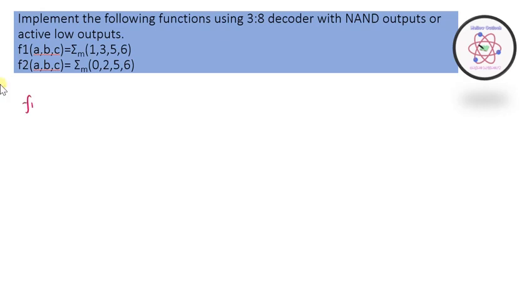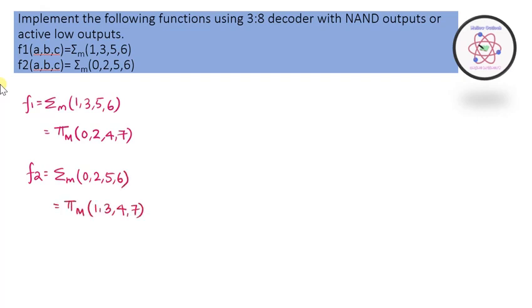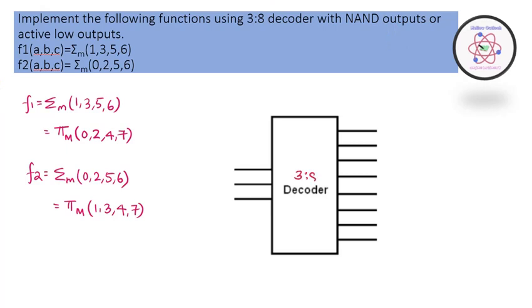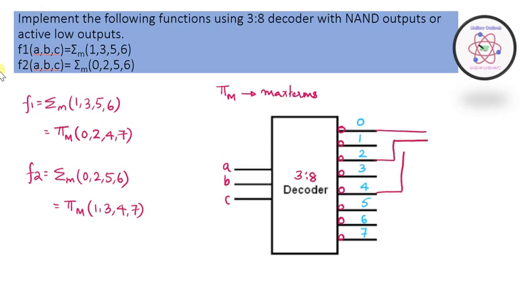The next question asks us to implement a function using a 3-to-8 decoder with NAND outputs or active low outputs, where the functions are given in terms of min terms. For NAND output implementation, we must first represent in terms of max terms. F1 is given as min terms {1, 3, 5, 6}, so in max terms we take the remaining: {0, 2, 4, 7}. For F2, the max term representation is {1, 3, 4, 7}. We bubble the outputs and combine the corresponding max term decimal notations using NAND gates.